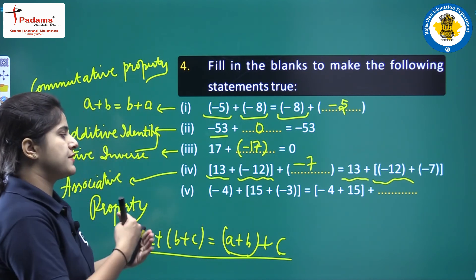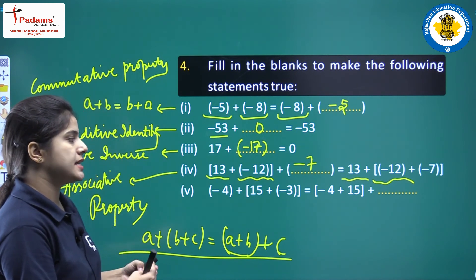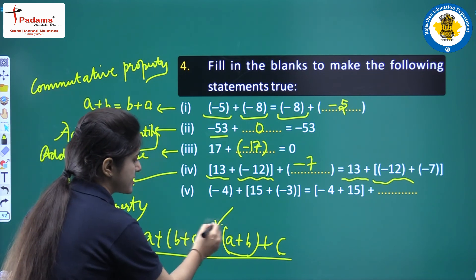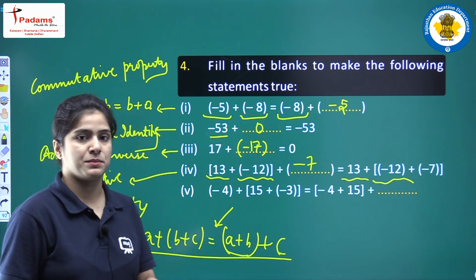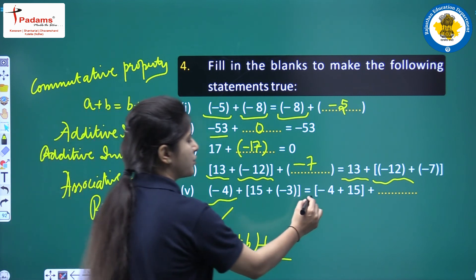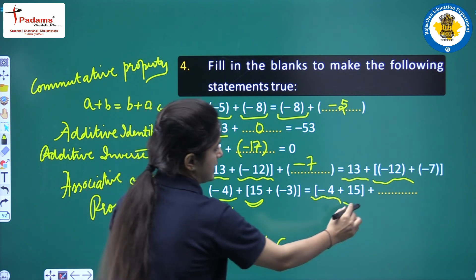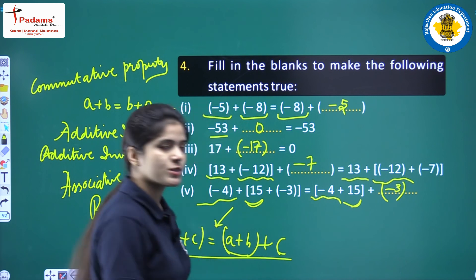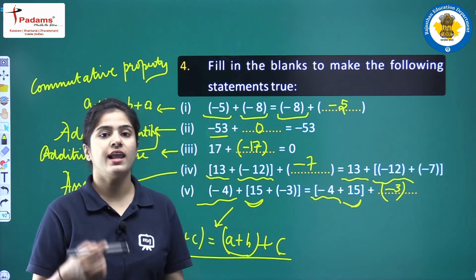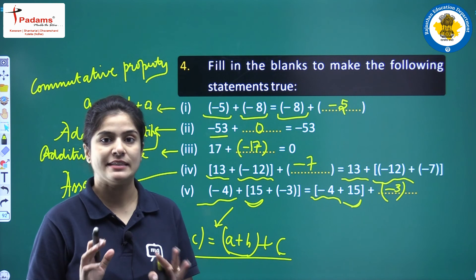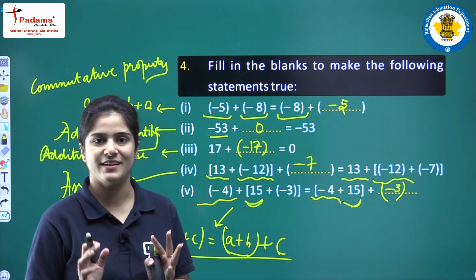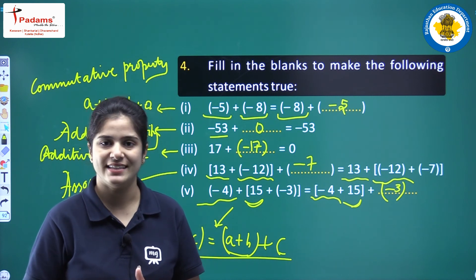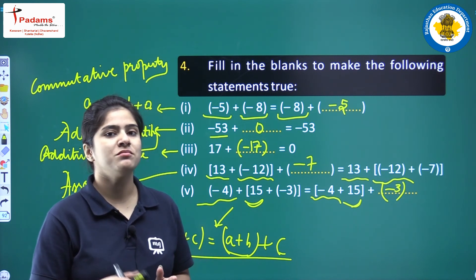Part e: minus 4 plus 15 plus minus 3 equals minus 4 plus 15 plus blank. The same associative property applies — minus 4 and 15 appear on both sides, so the missing value is minus 3. This completes Exercise 1.2. In the next class we will discuss Exercise 1.3. Bye!